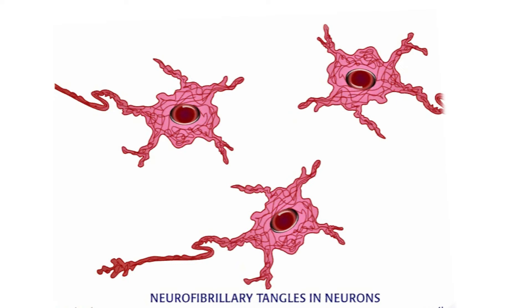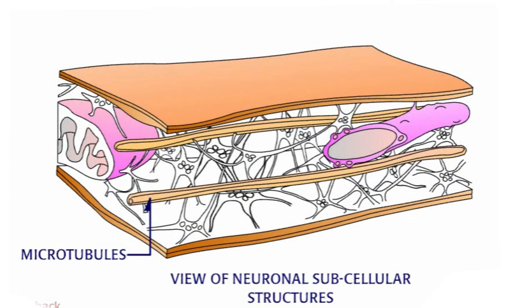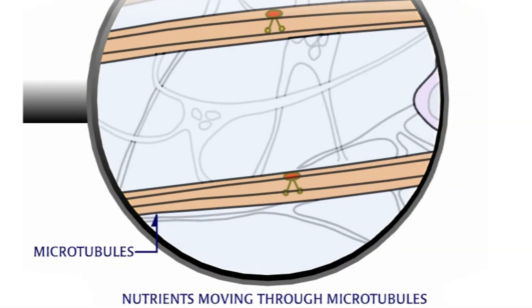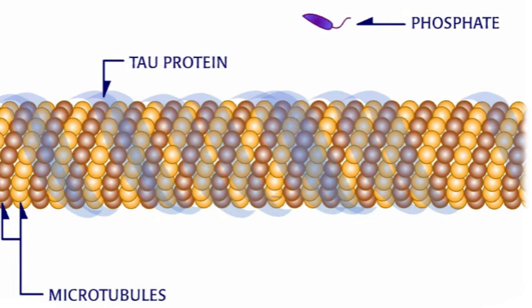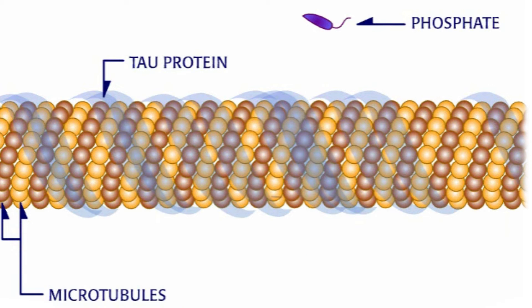Neurofibrillary tangles, the other abnormal cluster of proteins associated with Alzheimer's disease, occur within neurons. These intracellular tangles consist of twisted threads of a protein called tau. Normally, the tau protein has a clear-cut function in the human nervous system: it regulates the assembly of a neuron's internal structure and its nutrient transport system.